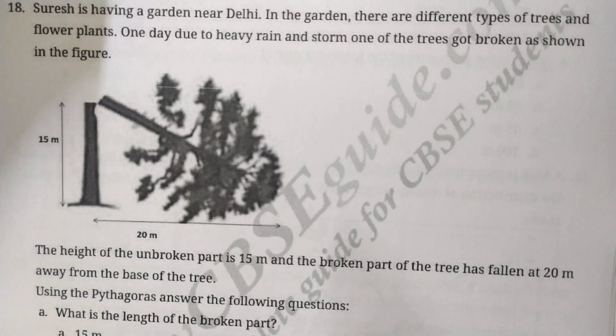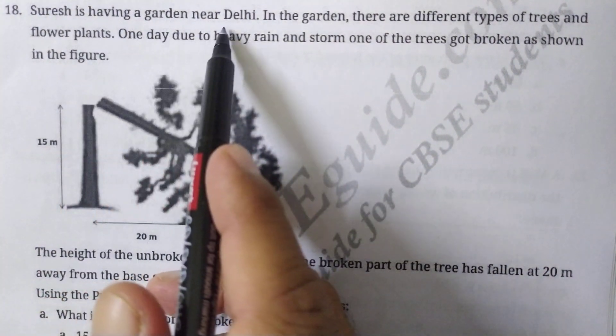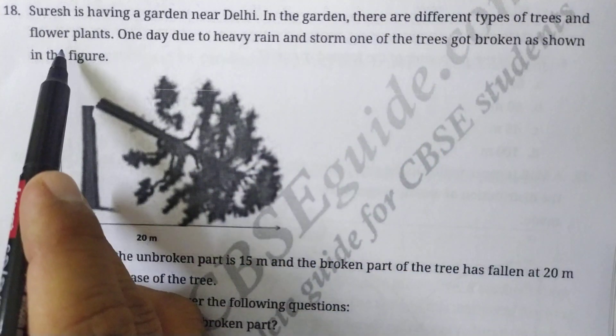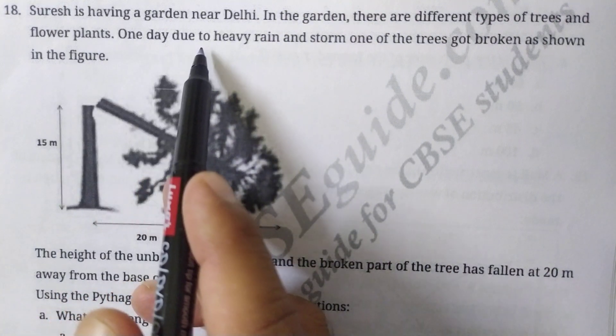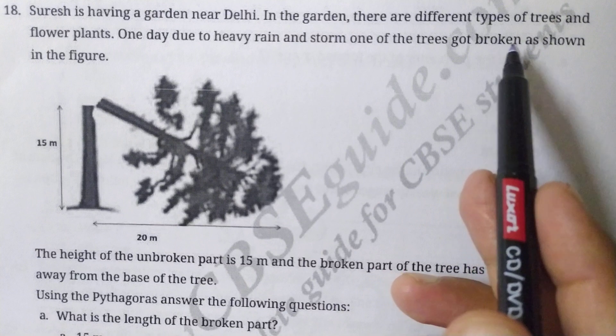The question says that Suresh is having a garden near Delhi. In the garden there are different types of trees and flower plants. One day due to heavy rain and storm, one of the trees got broken as shown in the figure.